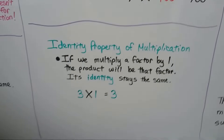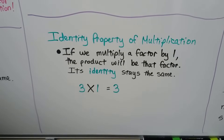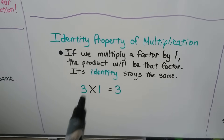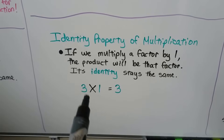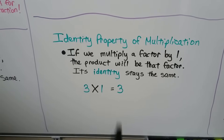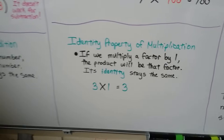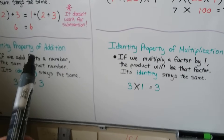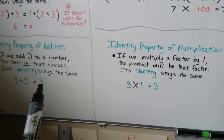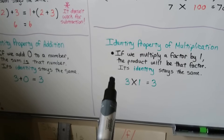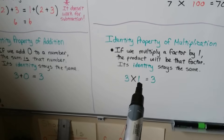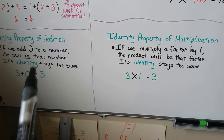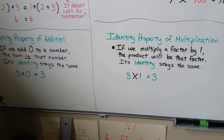The identity property of multiplication tells us if we multiply a factor by 1, that product will be that factor — its identity stays the same. So 3 times 1 stays 3; that 3 keeps its identity. Notice that in the identity property of addition, we add a 0 for the number to keep its identity, but in the identity property of multiplication, we multiply by 1. Addition uses a 0; multiplication uses a 1.